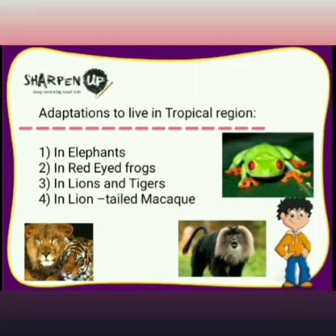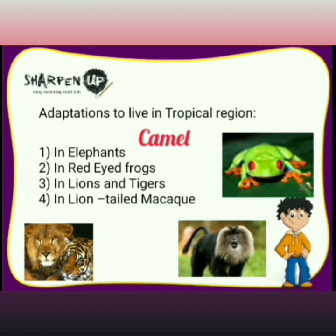Now let's look at adaptations to live in tropical regions. The camel is a great example: it has a hump that stores fat, big eyelashes that prevent sand from entering the eyes during sandstorms, and thick lips that help it eat prickly plants like cacti.